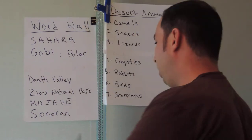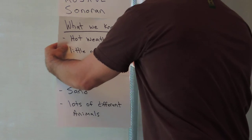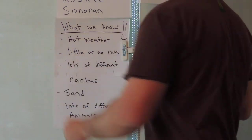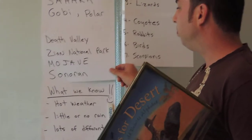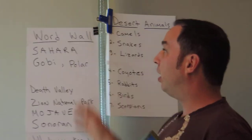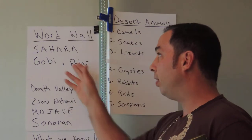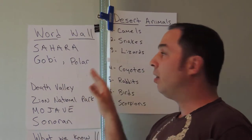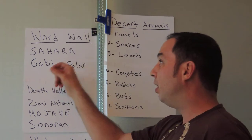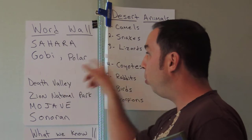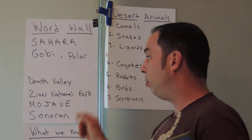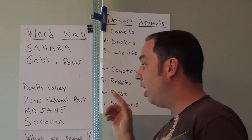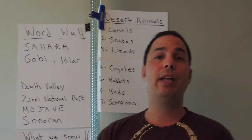We've listed a whole bunch of desert animals. I have our 'what we know' list that we just went over, so we'll put that up on the easel. I also made a word wall — these are different types of deserts from all over the world: the Sahara Desert, the Gobi Desert, Polar Desert, Death Valley, Zion National Park, the Mojave Desert, and the Sonoran Desert — that's the one we live in.